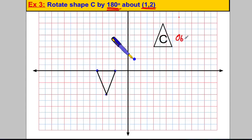Remember, the original shape is called the object and the new rotated shape is called the image. We've performed that rotation. Now what I'd like to do is show you a few things students do incorrectly, so you can make sure you don't do those. And finally, we'll end with a couple of exam questions. So I'm going to show you a couple of classic mistakes.